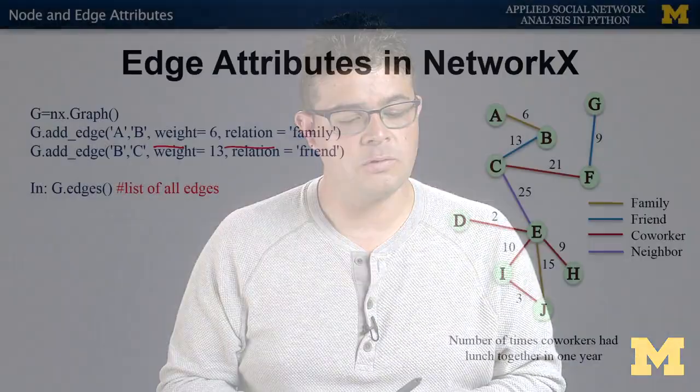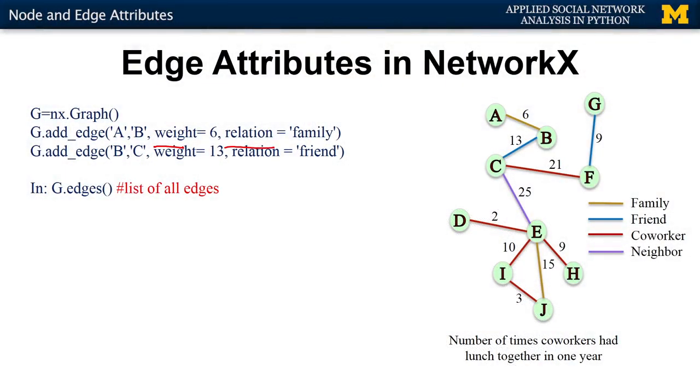What we're going to do in this video is learn how to access this information once we've loaded it up. If you have a network constructed in Python where the edges have attributes, how do we access these attributes? The first thing is if we just use the function `edges`, this will give us a list of all the edges of the network.